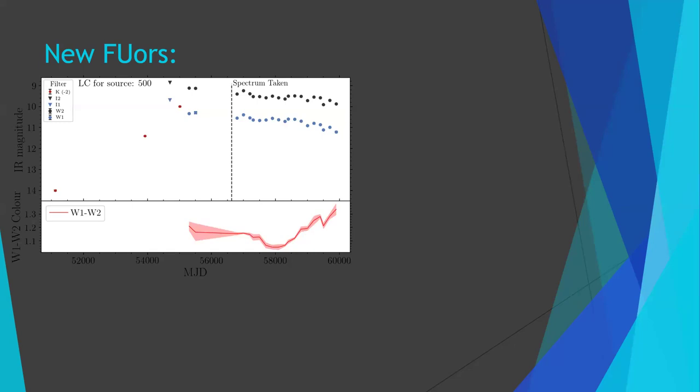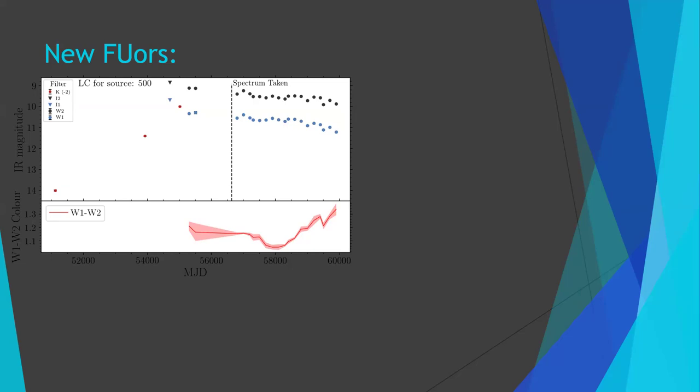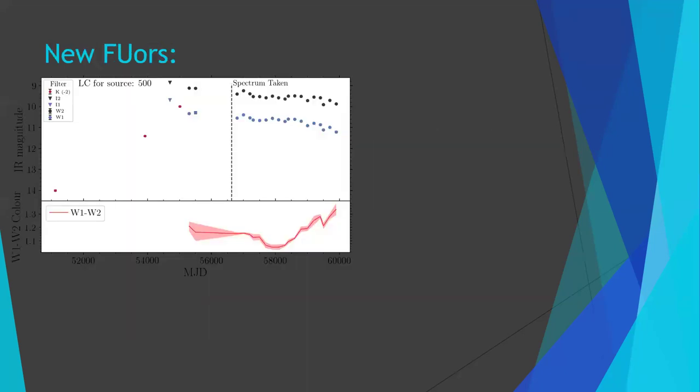Here is the light curve, with our lower limit shown. This being the K-band rise and then the mid-infrared post-outburst FUOR behaviour. The other FUOR candidate has an Untimely light curve in the thesis.